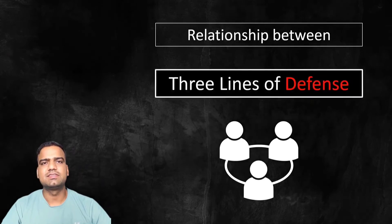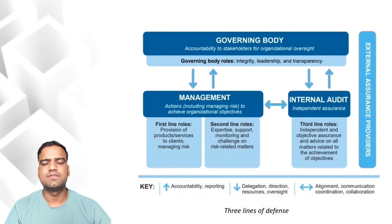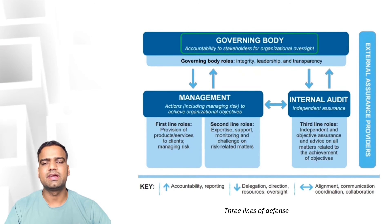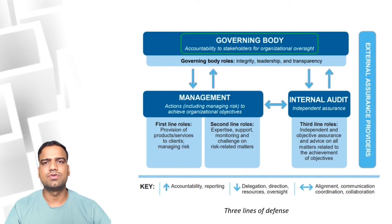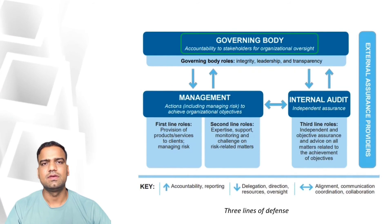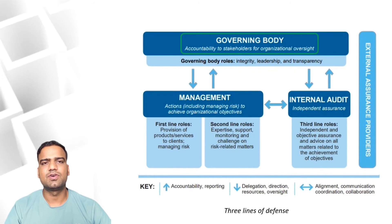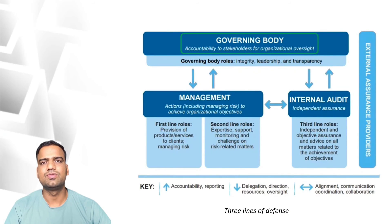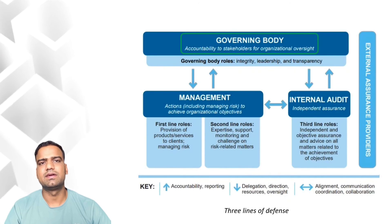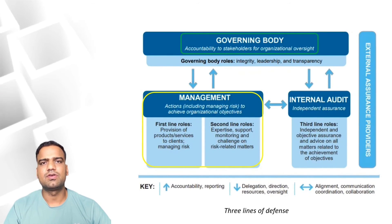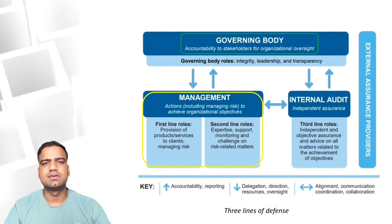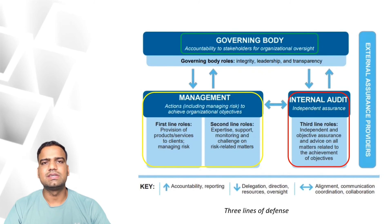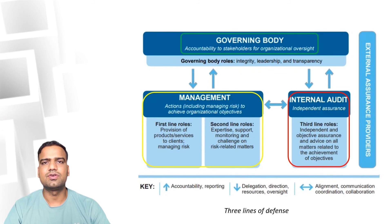What is the relationship between the three lines of defense? In the three lines of defense model, we have the governing body at the top level. The governing body typically consists of the board of directors, who establish the organization's overall risk appetite and set the tone for risk management throughout the organization. The governing body is accountable to its stakeholders — which may include customers, shareholders, suppliers, employees, or government — for effective oversight of risk. Below that is the management body, responsible for overall management and achieving the organization's objectives, which includes the first and second lines of defense. Internal audit is an independent assurance function that provides the governing body and senior management with independent reports on conformance with applicable standards and frameworks adopted by the organization.